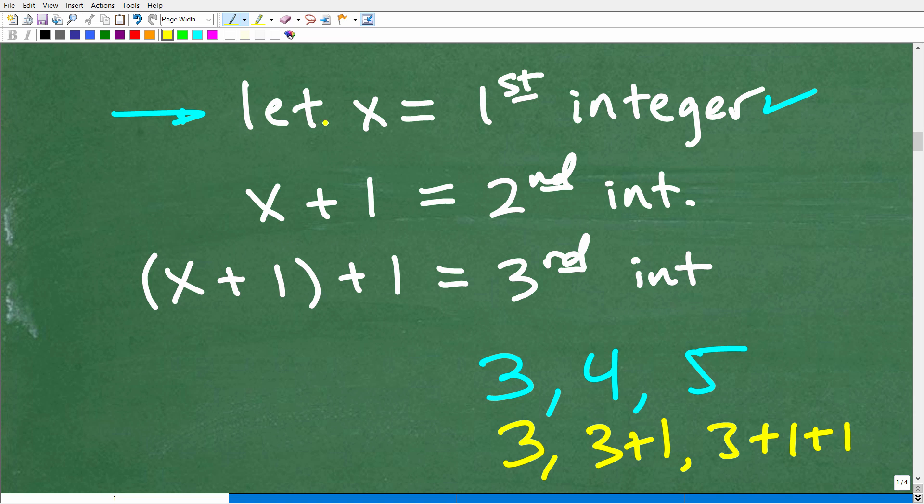So if x is going to be our first integer, x plus one is our second integer, and then our third integer is this x plus one plus another one, or x plus two, that is our third integer. All right, so now we have basically our variables established, we have some sort of model on what's going on.